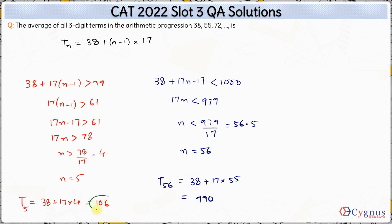So the smallest such number is 106 and the highest such number is 990. So the average of all such three digit terms is simply average of first and the last of these terms since all of them are in AP. So the required average is 106 plus 990 by 2 which is 1096 by 2 which is 548. Hence the answer to this question is 548. Thank you.